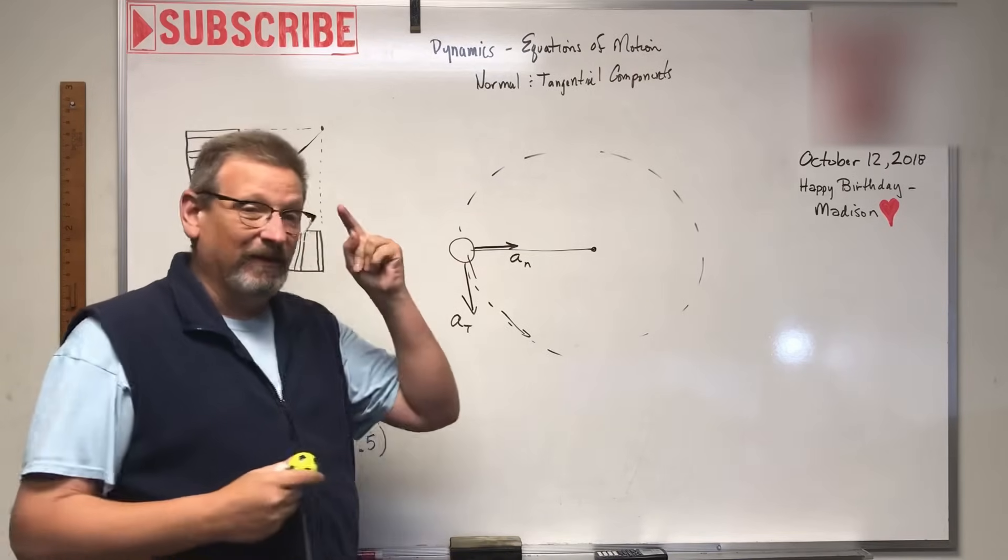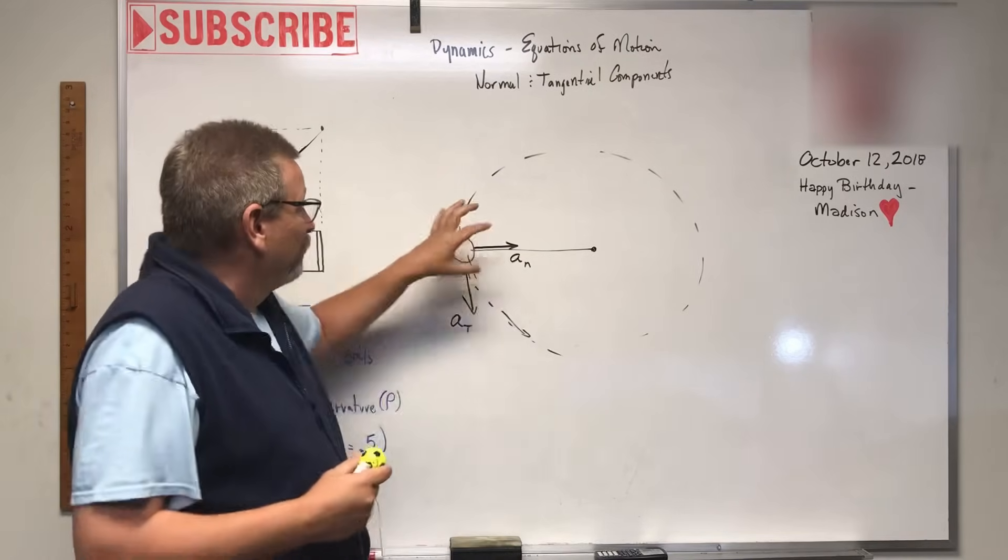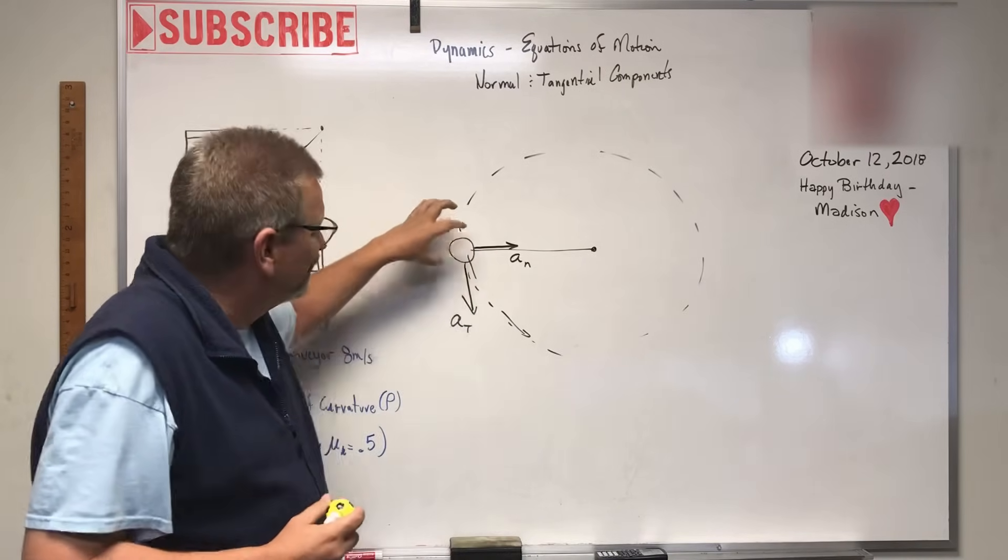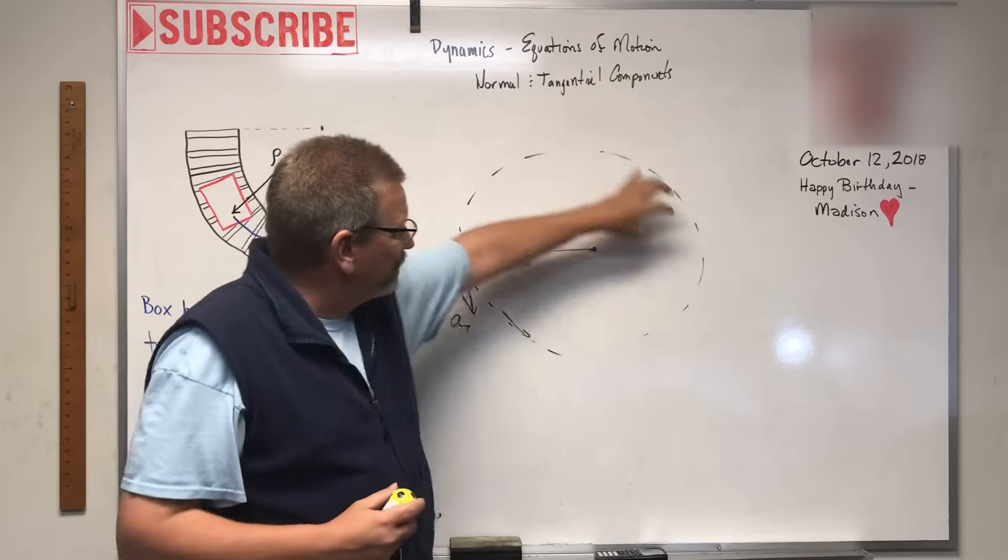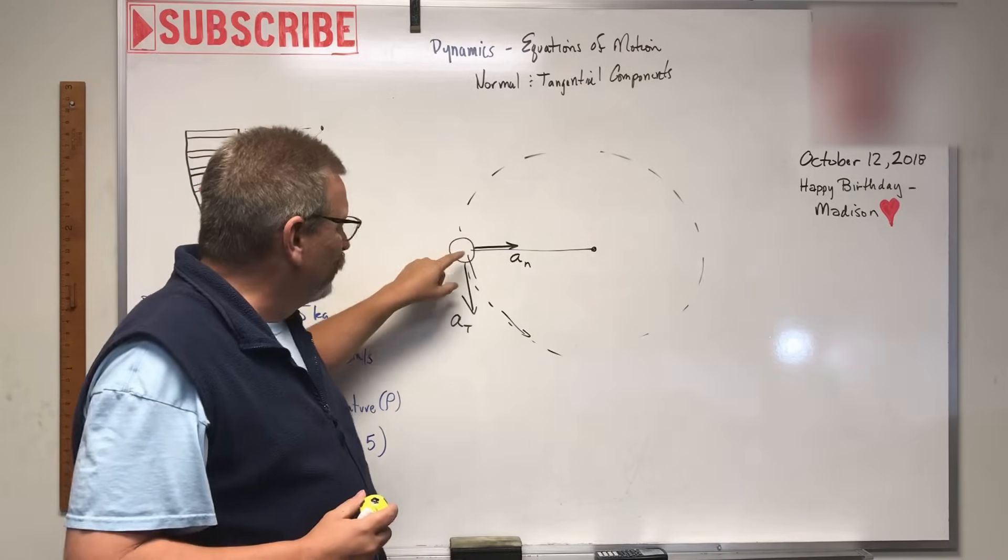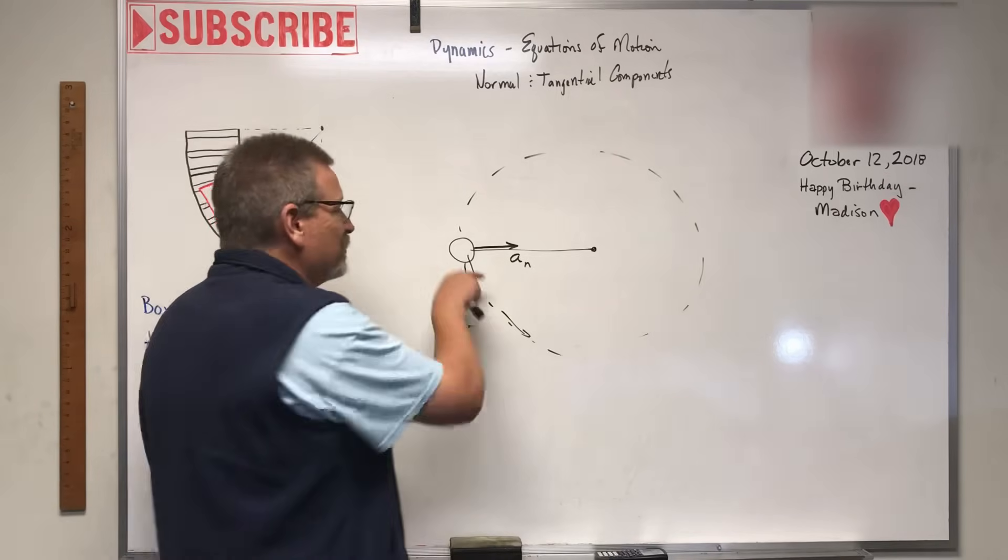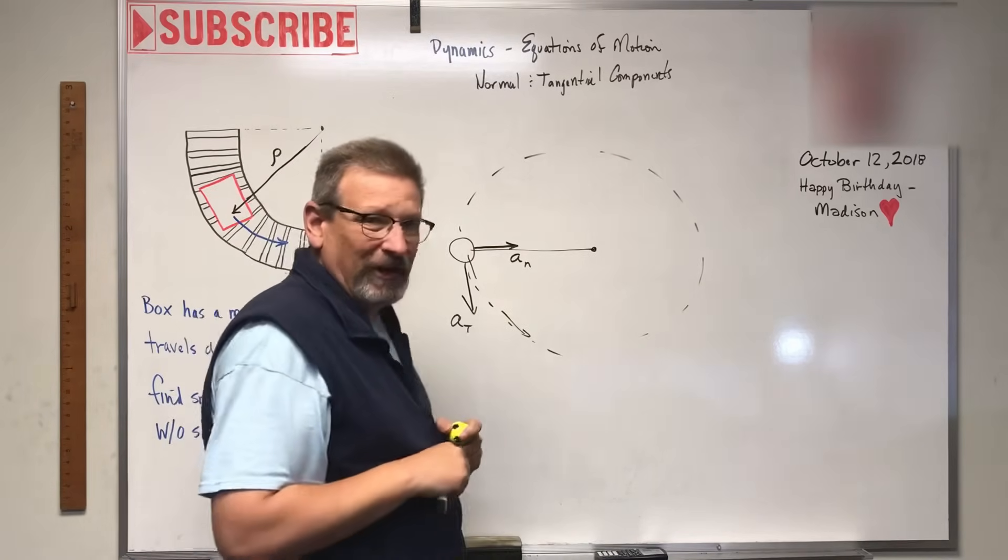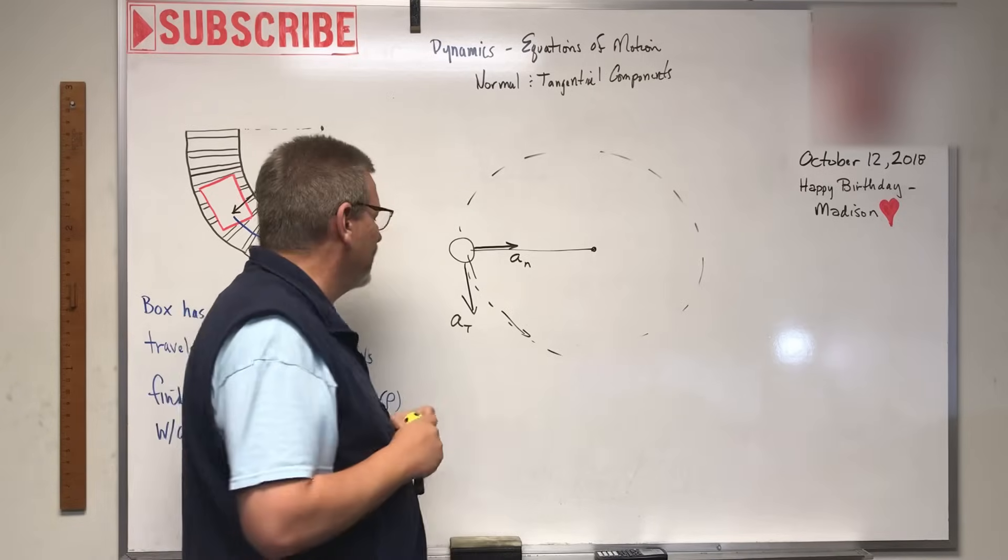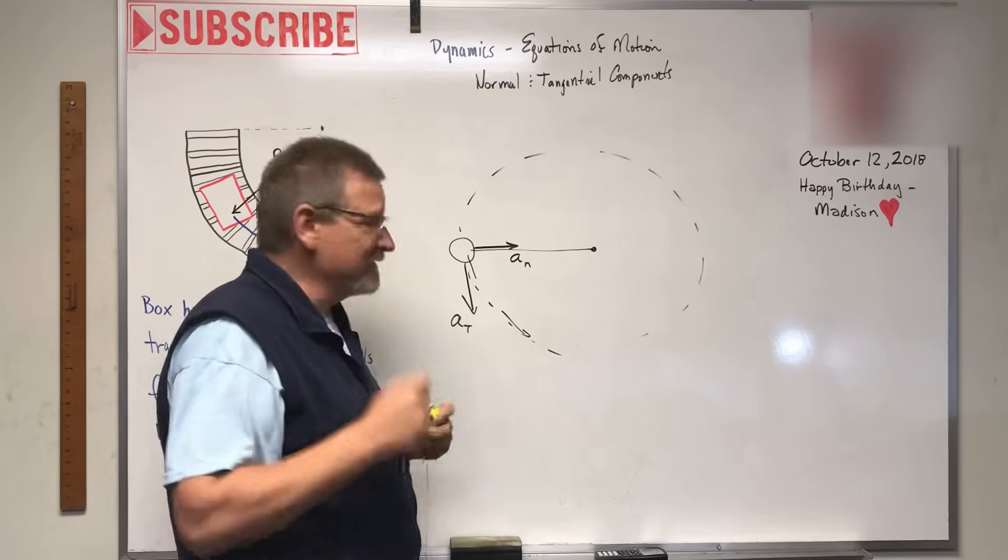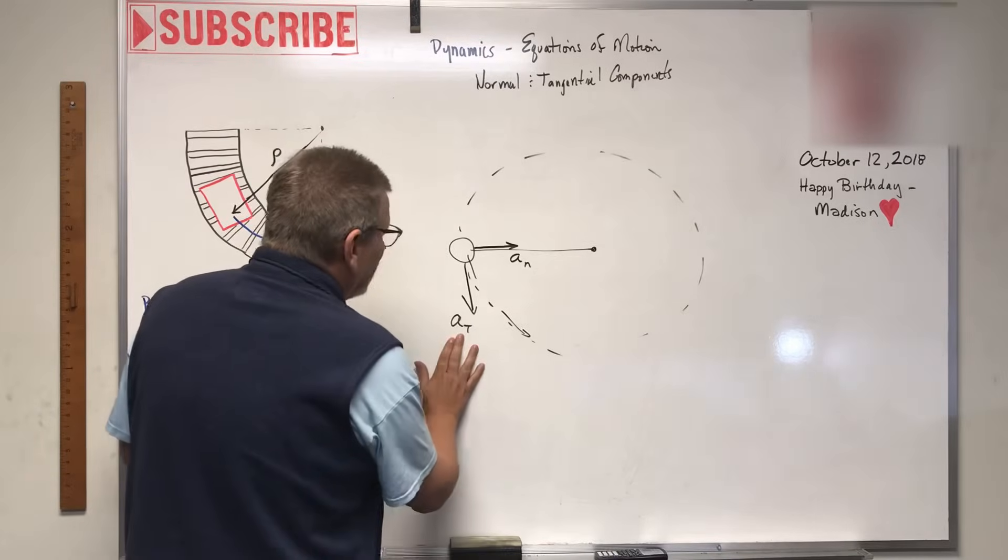Think about the free body diagram of the object. It's just like the earth going around the Sun - that normal force is the gravitational pull towards the middle. So that acceleration normal is in that direction towards the Sun. Think about the free body diagram and maybe that'll make sense to you.